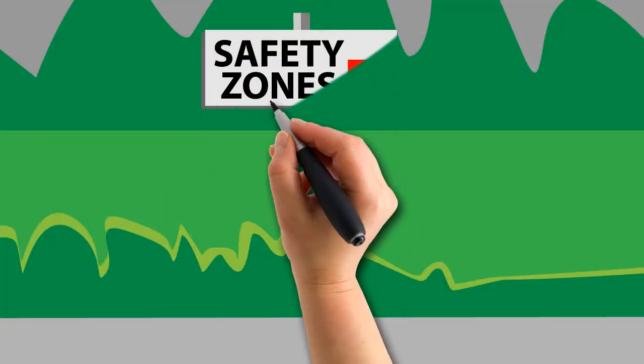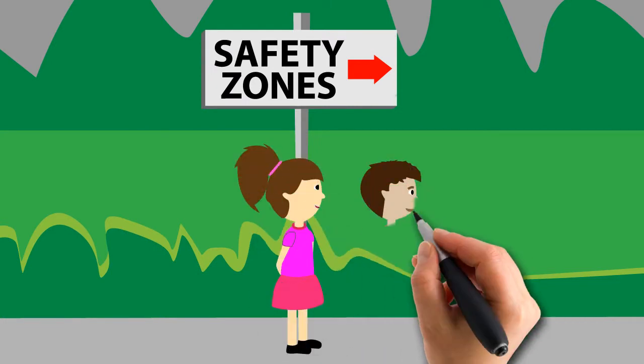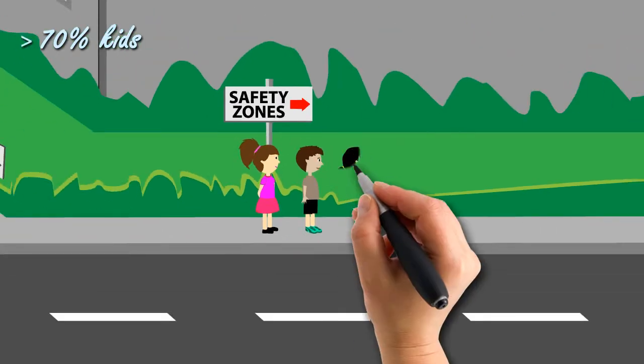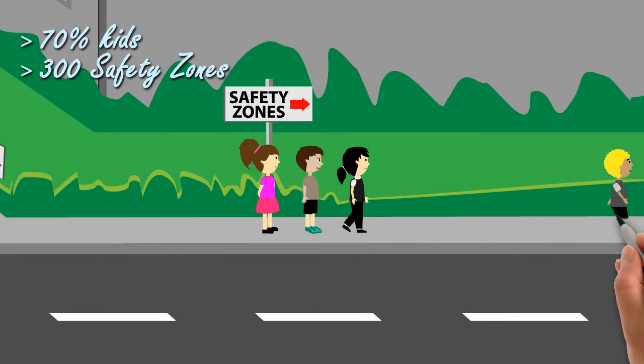We are almost there, with folks like you protecting 70% of the kids out there. More than 300 safety zones are already protecting almost 10,000 children.